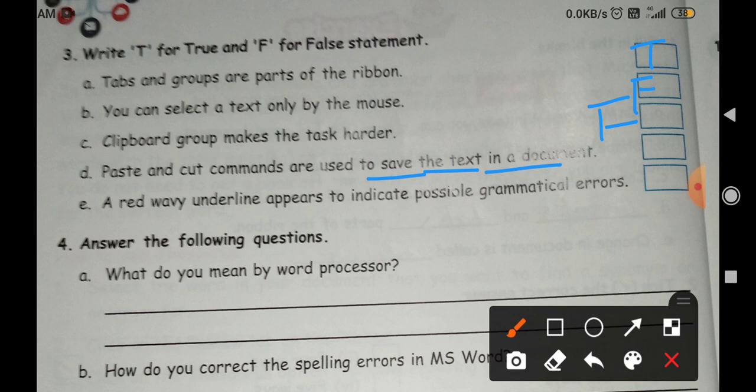Next, a red wavy underline appears to indicate possible grammatical errors. No, this is false because red underline indicates spelling error, not grammatical error. Green underline is used for grammatical error.